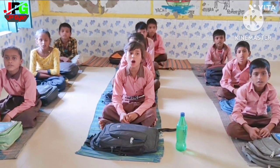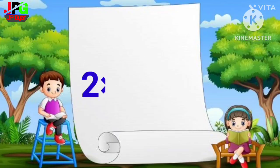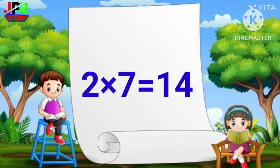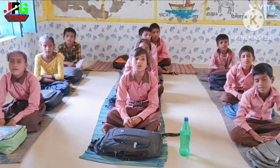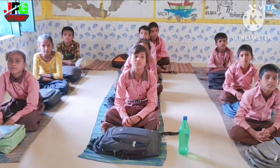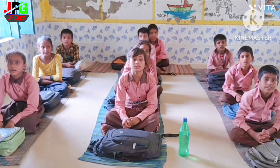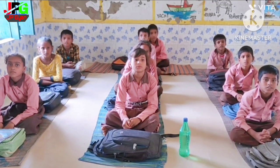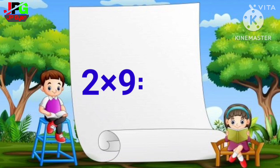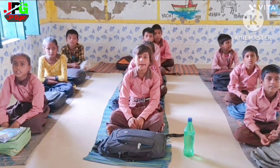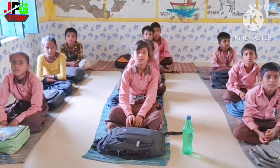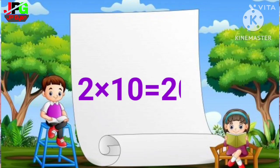2 6s are 12, 2 7s are 14, 2 8s are 16, 2 9s are 18, 2 10s are 20.